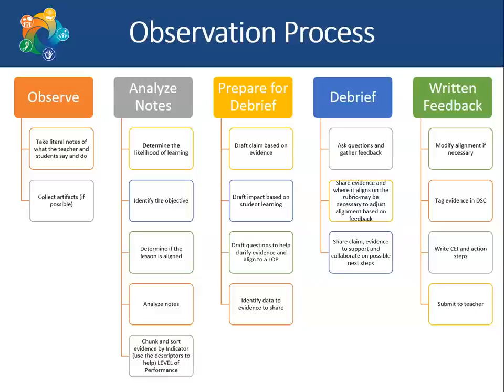The administrator may also identify data and evidence to share with the teacher. In the debrief, the administrator asks questions of the teacher and gathers feedback. They share evidence and where it aligns on the framework. They also share the claim and evidence to support their claim, and collaborate on possible next steps with the teacher. After the debrief, the administrator may make any modifications to alignment of evidence as necessary. They tag the evidence in the DSC, write the final claim, evidence, impact, and action step, and submit the observation to the teacher.